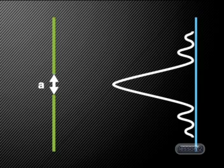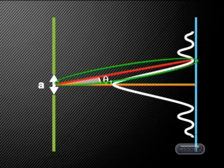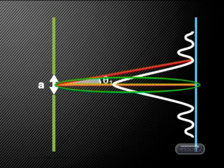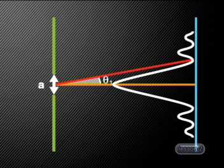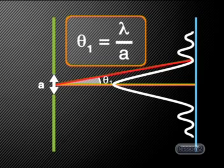We can actually work out where these light patches and dark fringes will be formed on the screen. In this diagram, the slit has a width of a. The wave has a wavelength of lambda. We can draw a line from the first dark fringe to the middle of the slit to meet a horizontal line drawn from this point towards the screen. The angle between these lines is labeled theta 1 on the diagram. Scientists have proved that the angle theta 1 is given by the equation: theta 1 equals lambda divided by a.